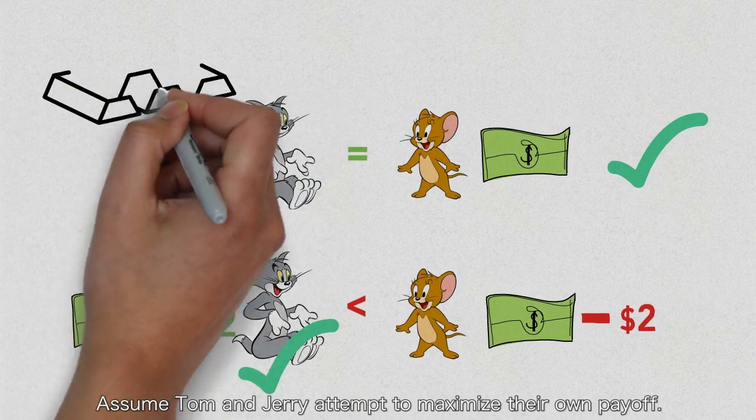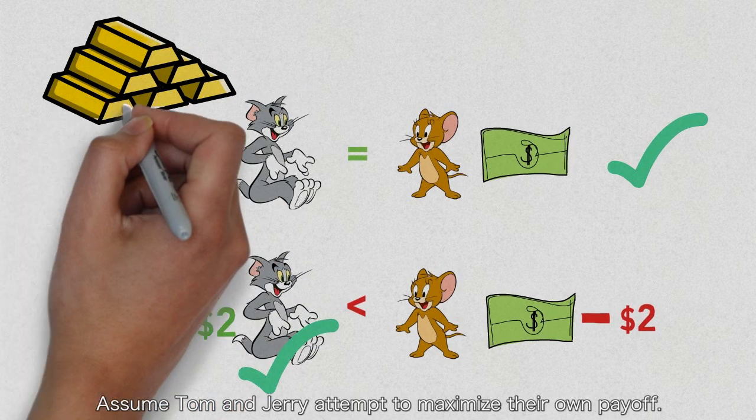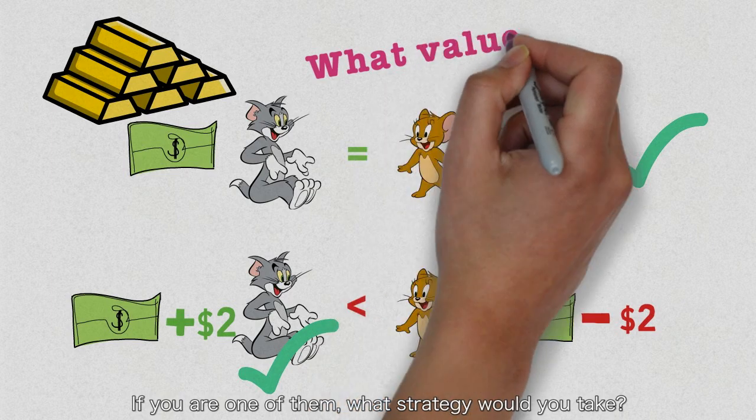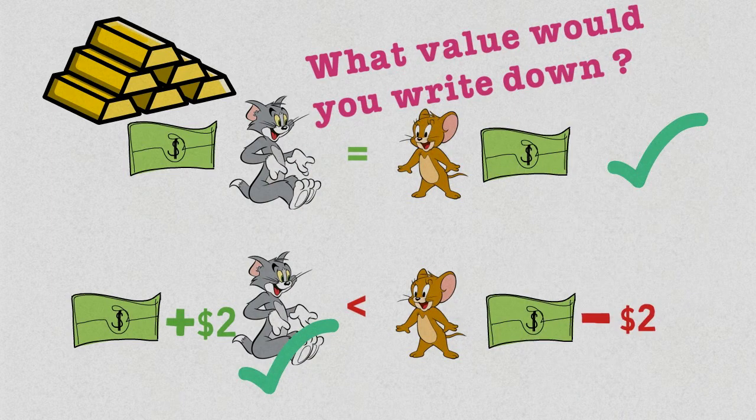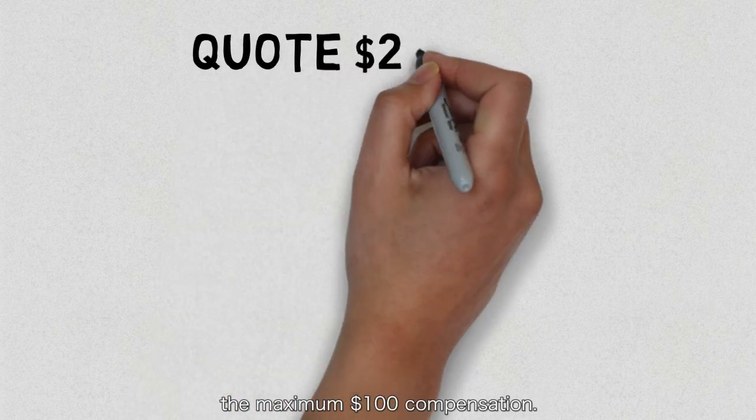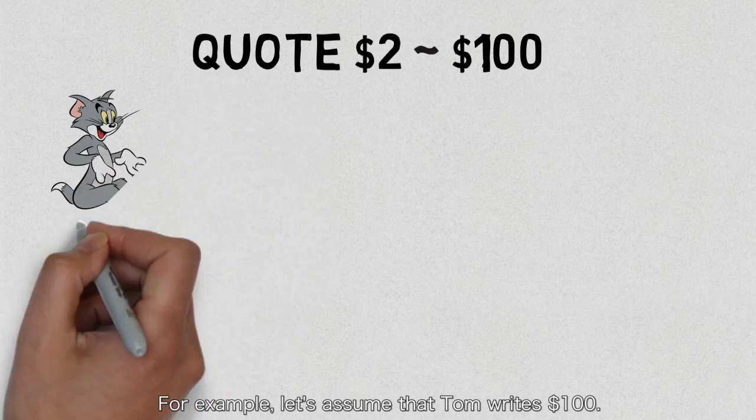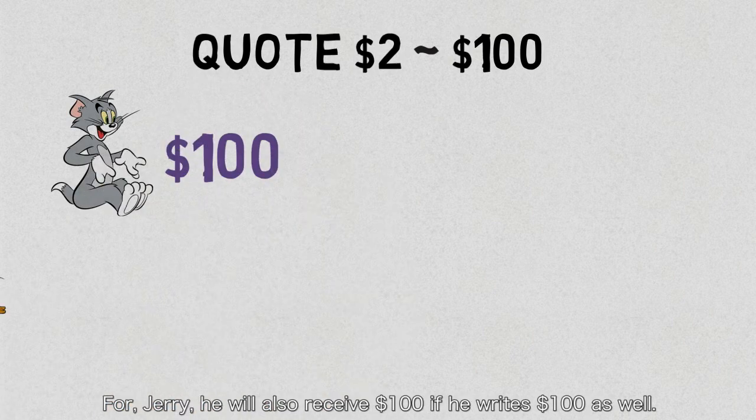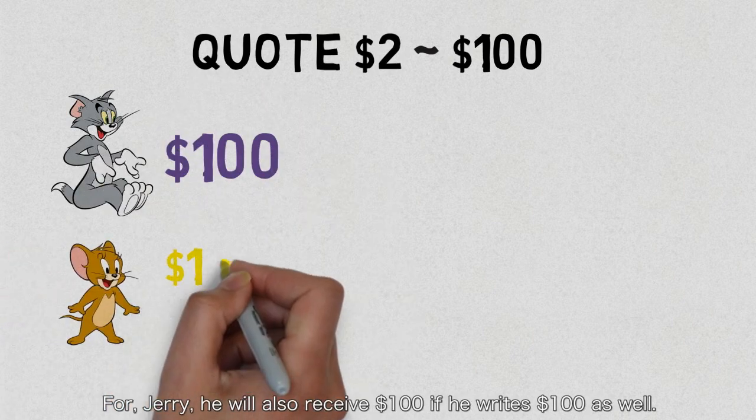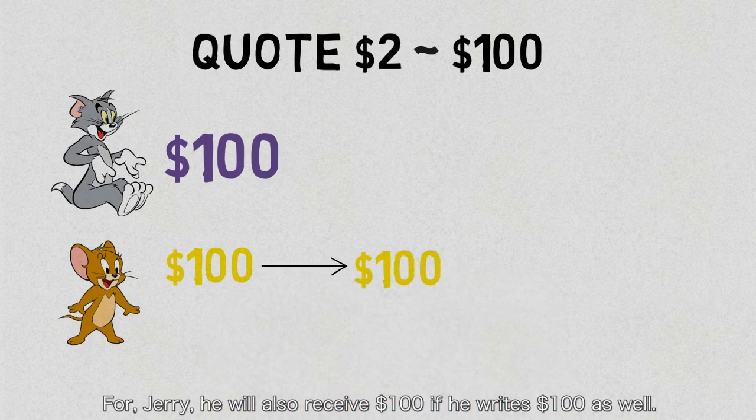Assume that Tom and Jerry attempt to maximize their own payoff. If you are one of them, what strategy would you take? Obviously, everyone wants to receive the maximum of a hundred dollars compensation. For example, let's assume that Tom writes down a hundred. For Jerry, he will also receive a hundred if he writes down a hundred as well.